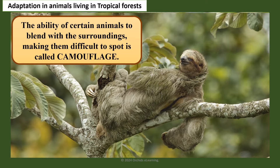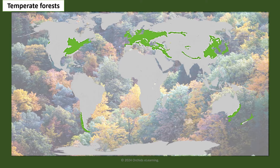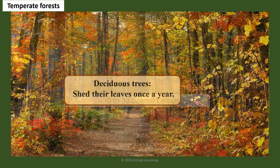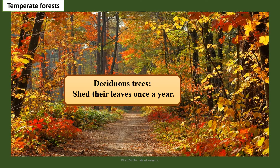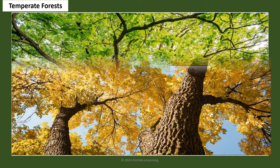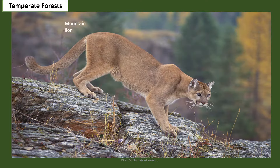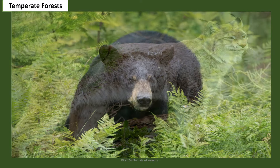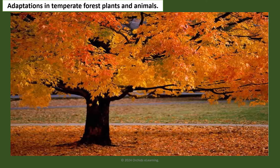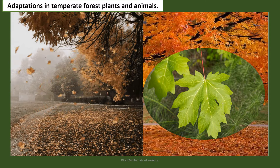Temperate forests are found in eastern North America, northeastern Asia, and western and central Europe. Temperatures range from minus 30 to 30 degrees Celsius. Most trees found here are deciduous — they shed their leaves once a year. Trees such as maple, oak, and elm are found here. Animals include fox, bald eagle, mountain lion, bobcat, and black bear. Deciduous trees have thin, broad leaves that allow them to capture sunlight, and shed their leaves in freezing winters to prevent damage.